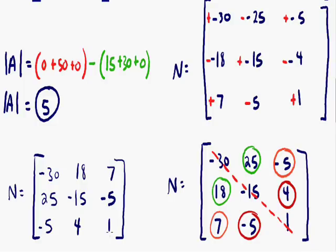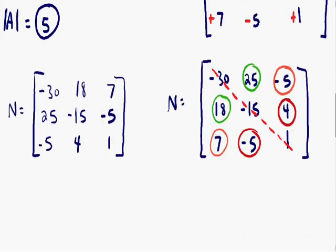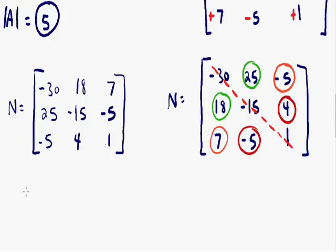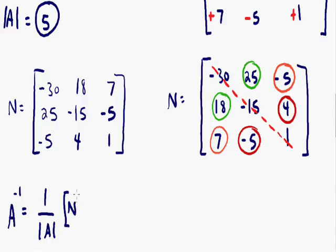So now we have completely found our new matrix N. The formula for the inverse of matrix A is equal to 1 over the determinant of A, all multiplied by matrix N. We know from earlier that the determinant of A was 5, so 1 over the determinant of A is going to be 1 over 5.